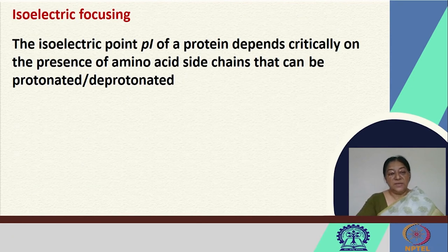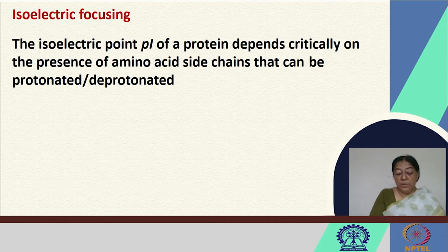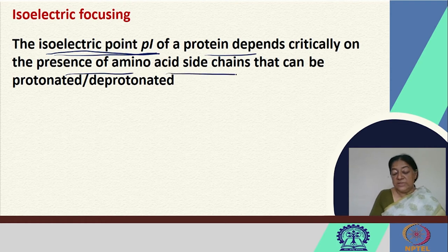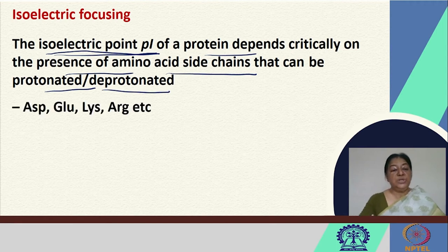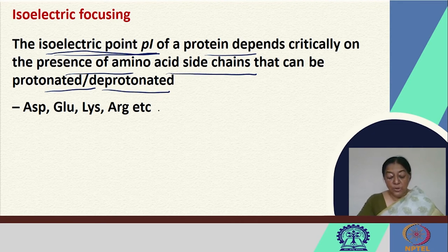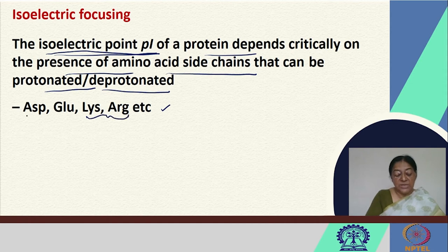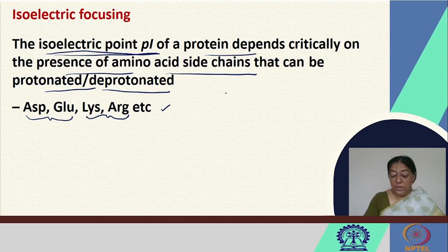Another experiment allows us to identify the pI of a protein based on its isoelectric point. The isoelectric point depends critically on the presence of amino acid side chains that can be protonated or deprotonated. We need to know which amino acids will have a charge at a specific pH. We know that aspartic acid and glutamic acid have negative charges, and lysine and arginine have positive charges. Depending upon the pH, if we reduce the pH to a low value, we expect our molecule to be positively charged.